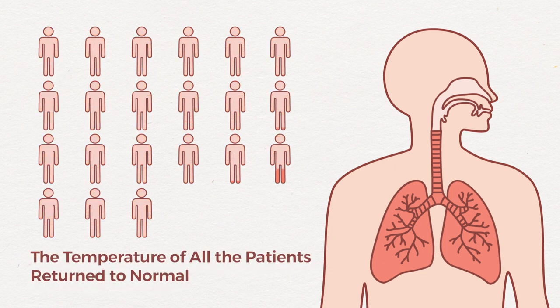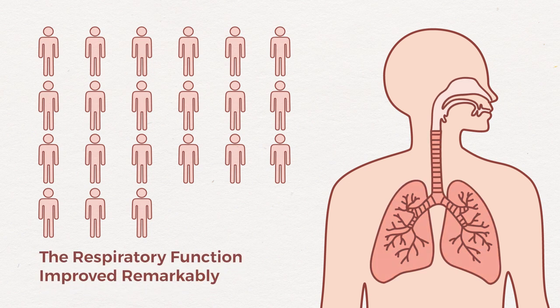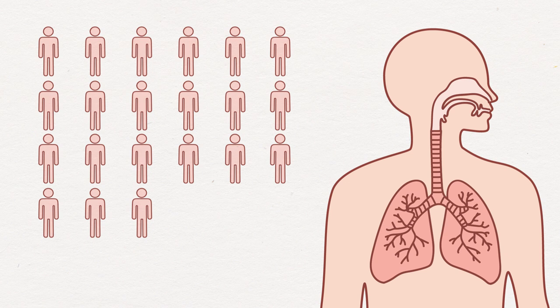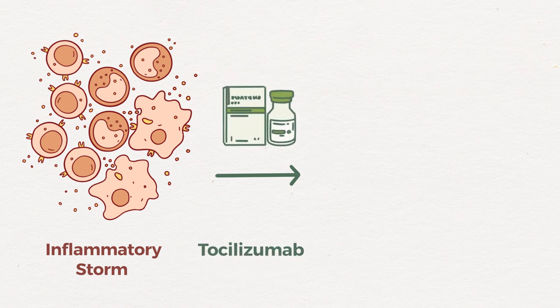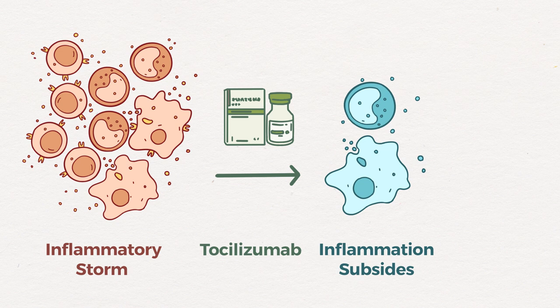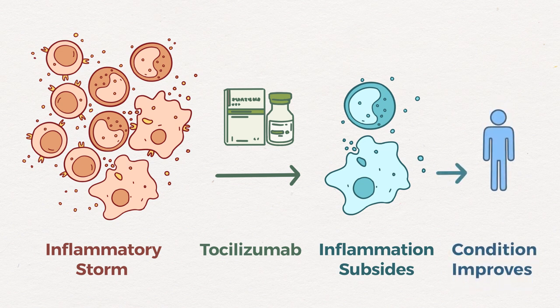After the treatment, the temperature of all the patients returned to normal. The respiratory function and all other symptoms improved remarkably. These 21 patients are all discharged now. The existing clinical data show that the research team of USTC has discovered the mechanism of inflammatory storm in patients with COVID-19 and found an effective drug to block inflammatory storms, which can prevent patients from becoming severe or critical and reduce mortality of severe COVID-19 cases.